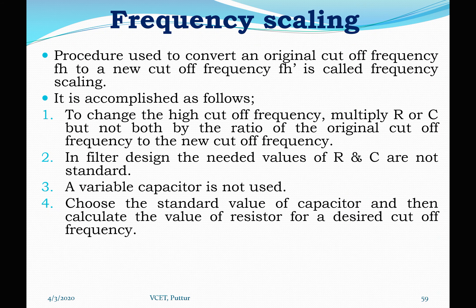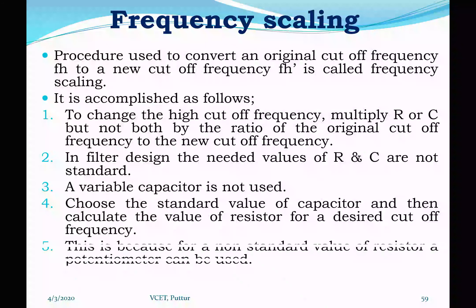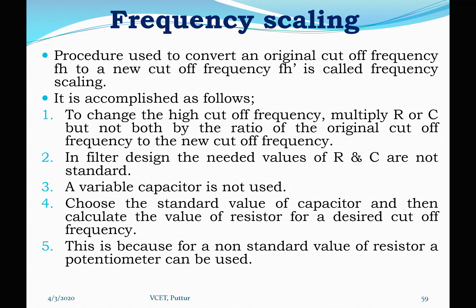The desired cutoff frequency or R value is calculated as 1 divided by 2πRC for the higher frequency, or 1 divided by 2πFC for a resistor. This is mainly because for a non-standard value of resistor, a potentiometer can be used. For example, 9.9 kΩ is not a standard resistor value, so we can use a potentiometer, which is a variable resistor, such as a 10 kΩ potentiometer, and adjust it to 9.94 kΩ for frequency scaling.